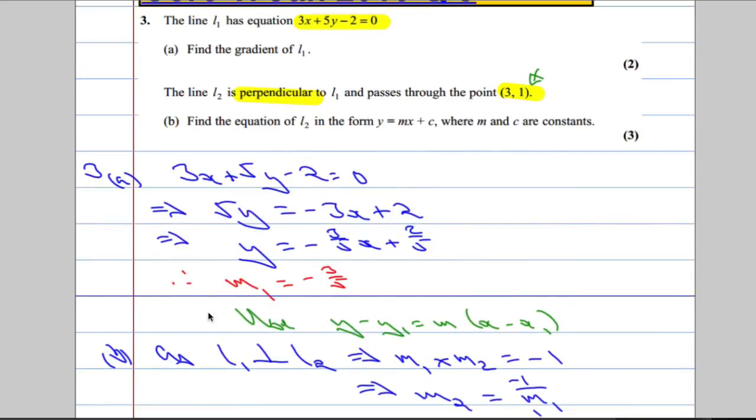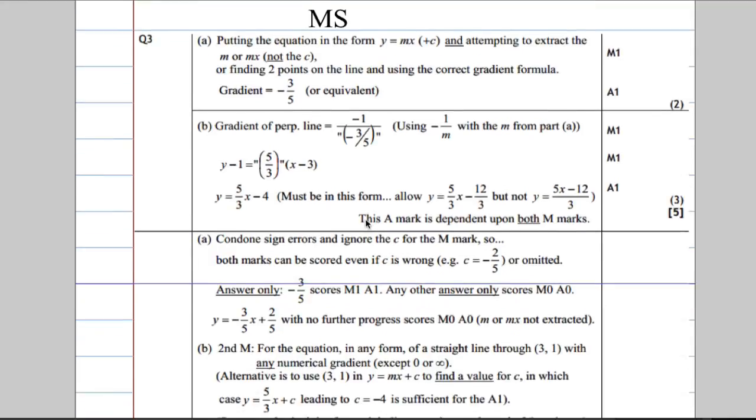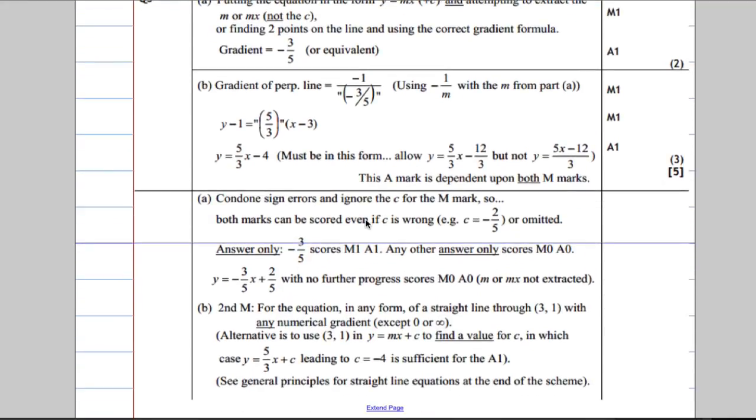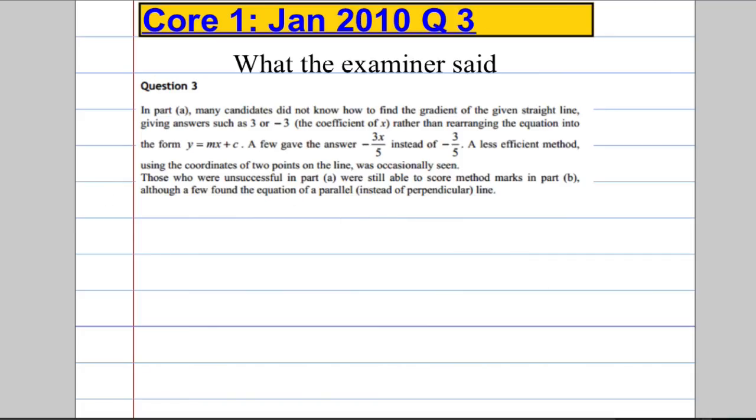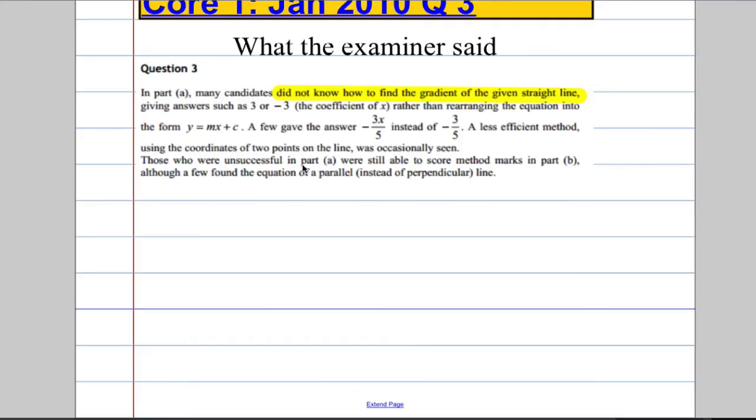Okay. There's a mark scheme there, just confirming it: y equals 5 over 3x minus 4. You can have a look at that if you need to. And then here, we've got what the examiner said again. Important things: lots of candidates didn't know how to find the gradient when given the straight line. So you've got to be familiar with rearranging. And then there's some other information in there as well. So do take your time and have a read of that.